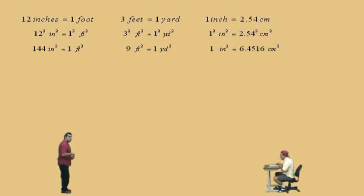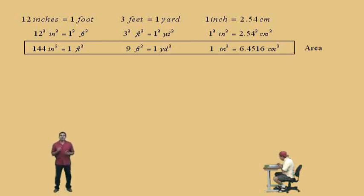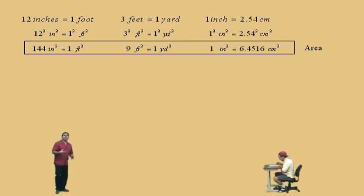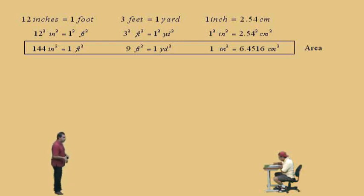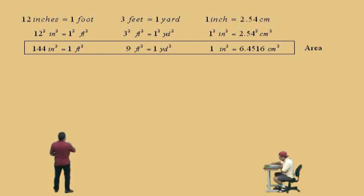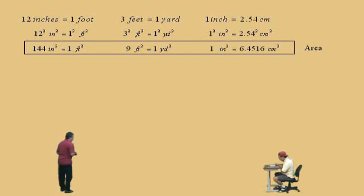Now, if we want volume, remember, volume is three dimensions. The volume of a rectangular box is length times width times height, and those dimensions would be like inches cubed, or centimeters cubed, or yards cubed, or feet cubed. We're going to take our equations and this time cube both sides to give us these answers.